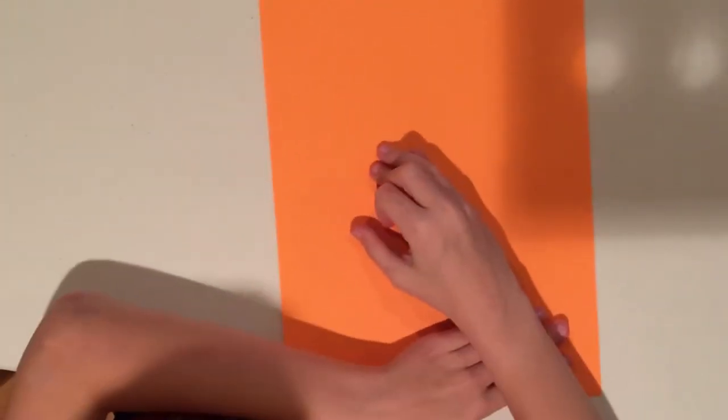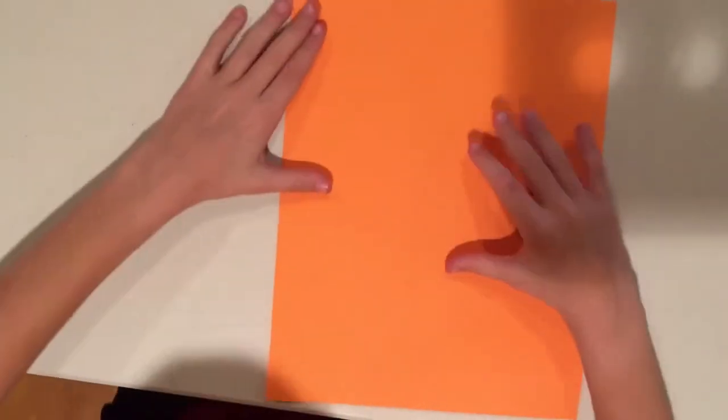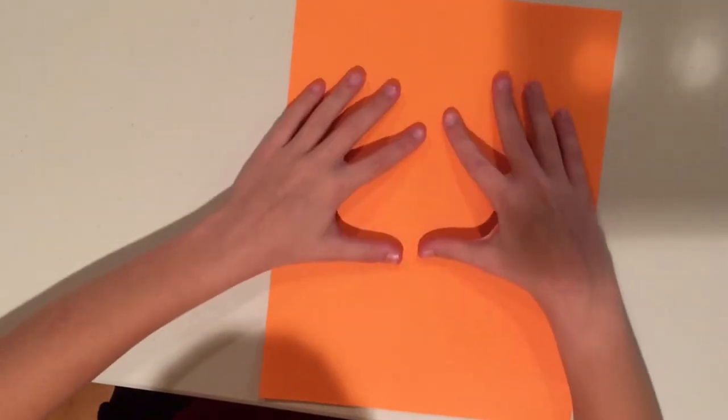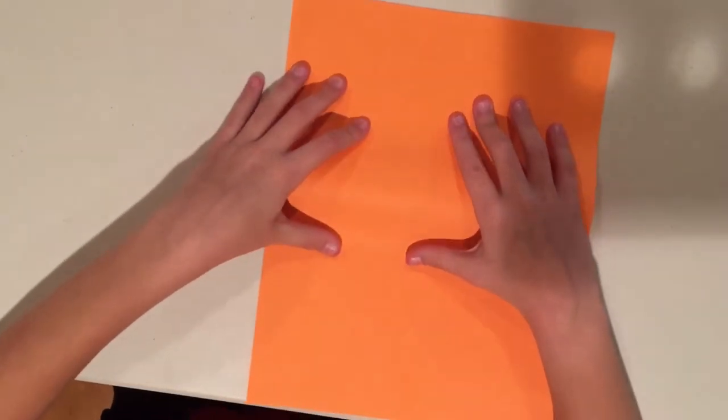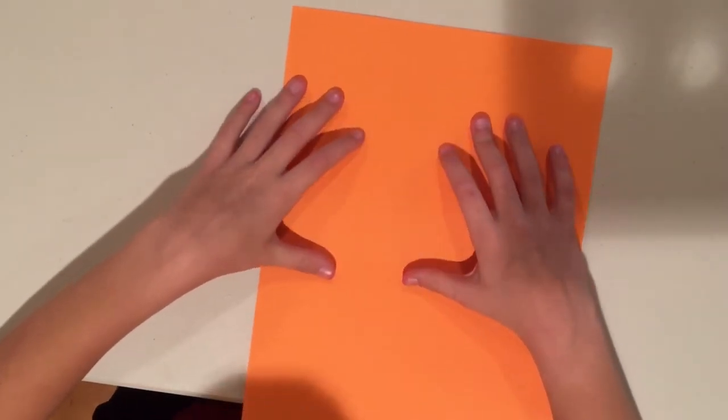I'm going to be using orange Astrobytes paper. You can get that at Walmart if you want. And yeah, let's get started.